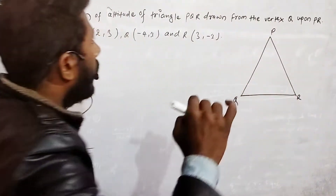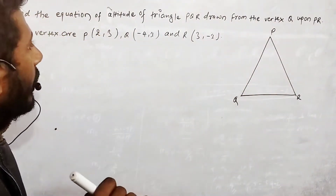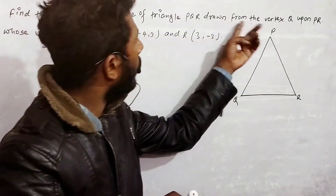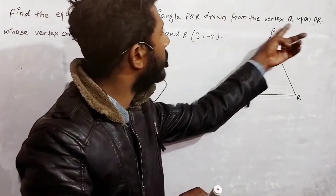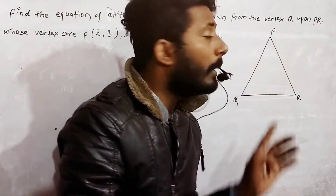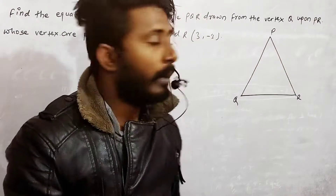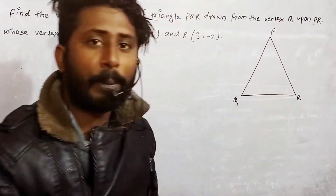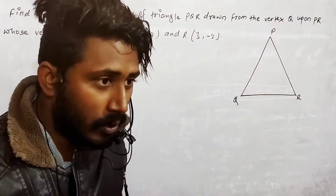So in triangle PQR, the question is: from vertex Q, what is the altitude to PR? Meaning Q to PR is a perpendicular line.